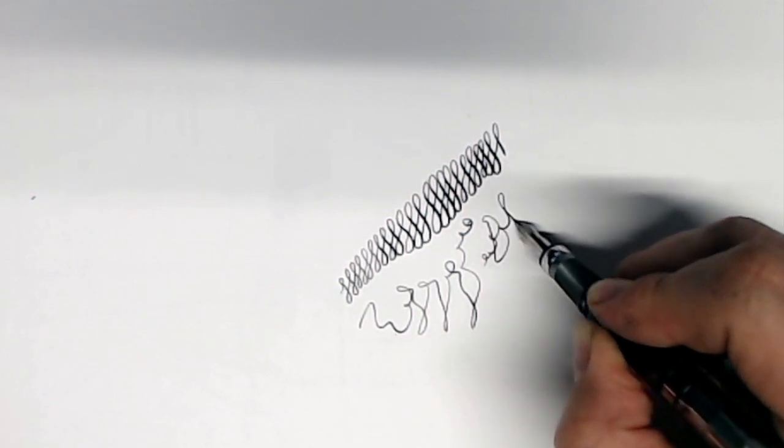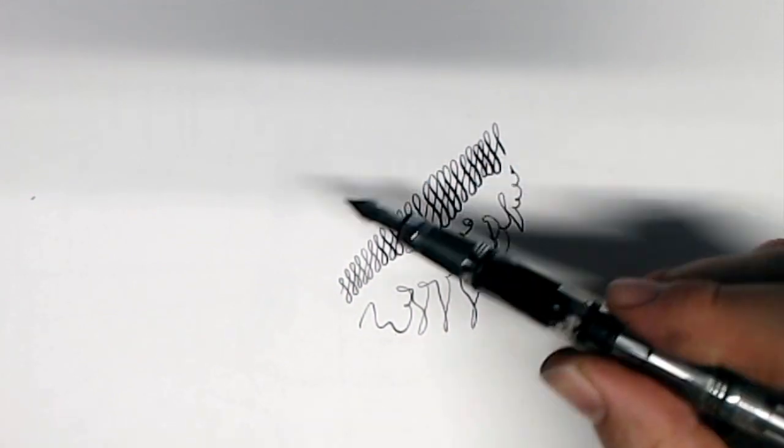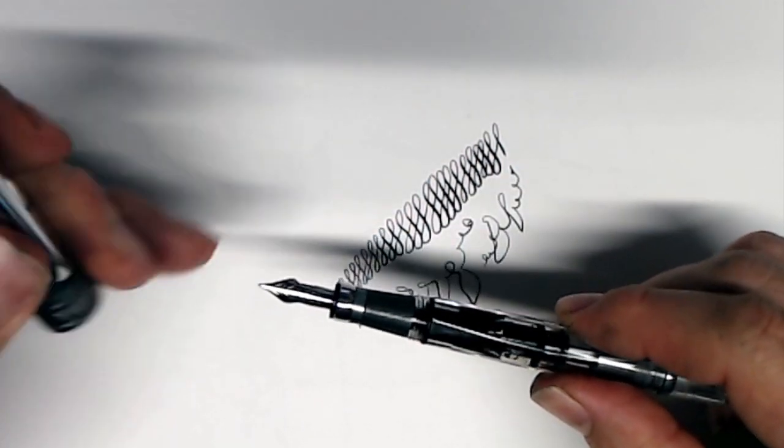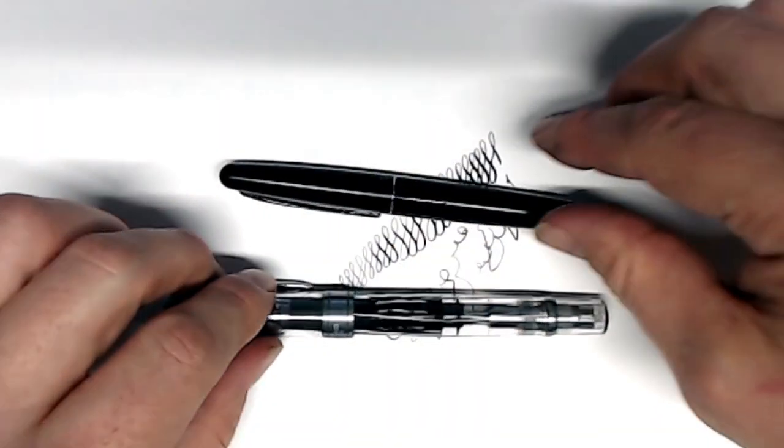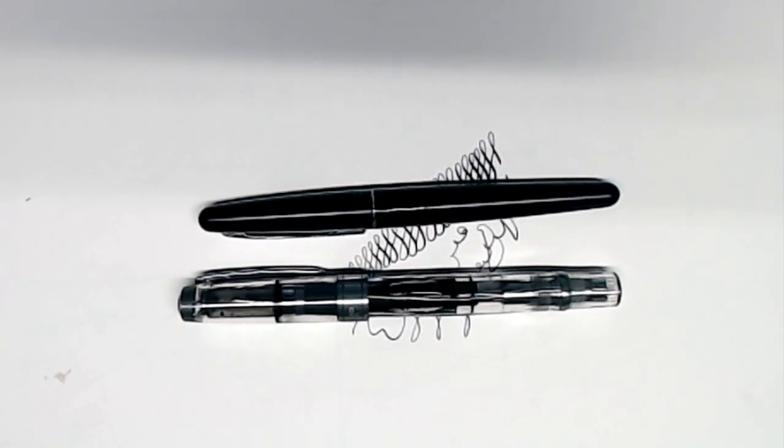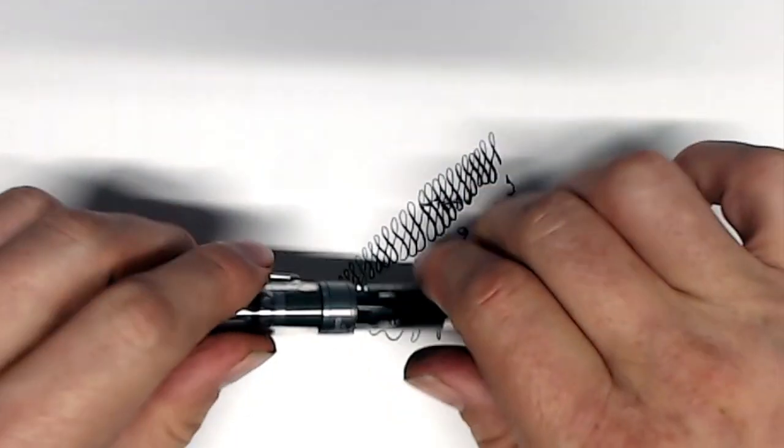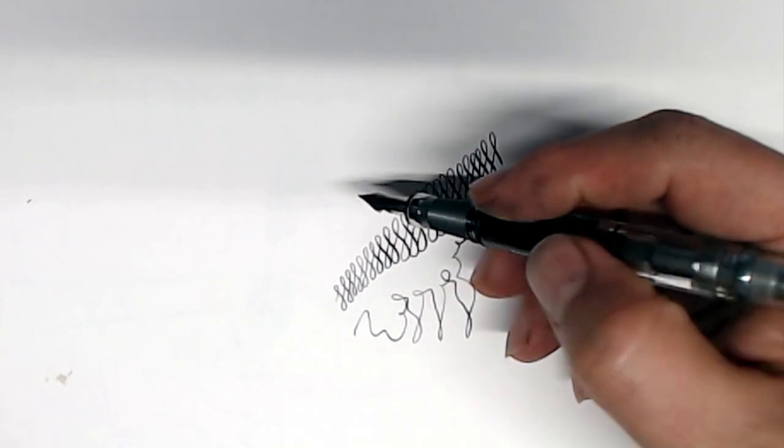Now, for those of you not familiar with the Twsbi 580AL, it's a fairly large pen. It is a piston filler. It has a lot of ink capacity. Here it is in comparison with a Pilot Metropolitan.